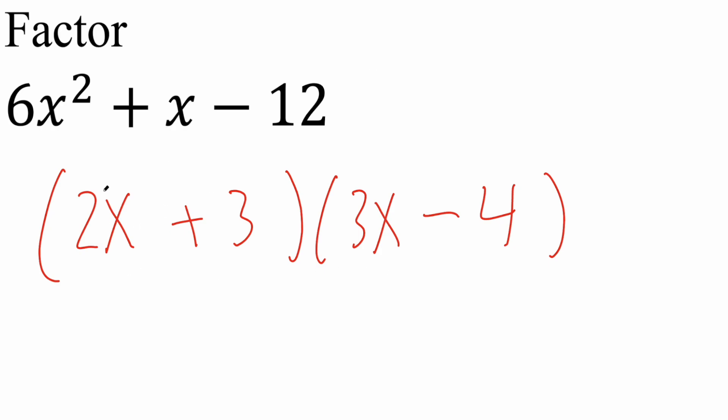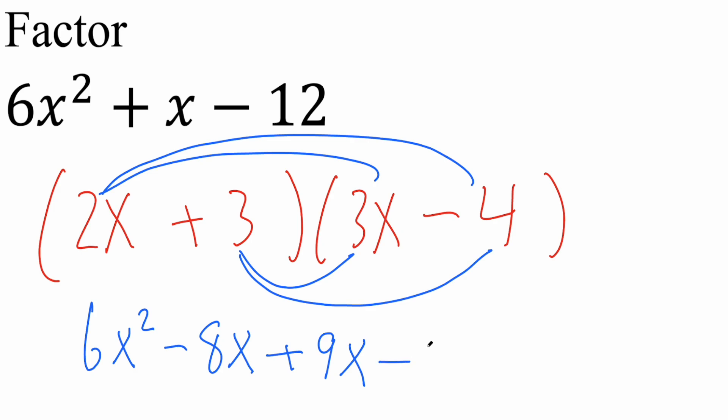Now if you wanted to check, you could expand. So you could take 2x times 3x, and you would get 6x squared. You could take 2x times negative 4, and you would get negative 8x. You could take 3 times 3x, and you would get positive 9x. You could take 3 times negative 4, and you would get negative 12.